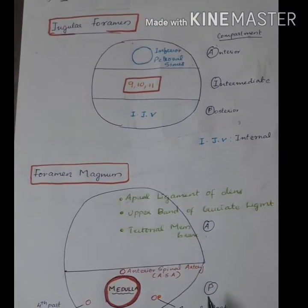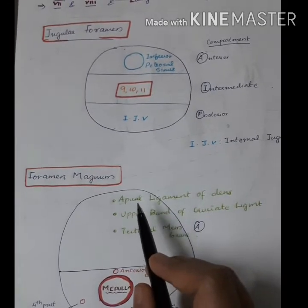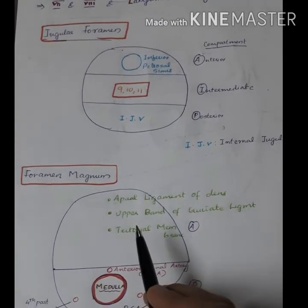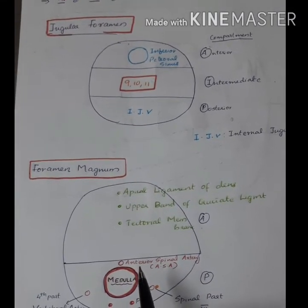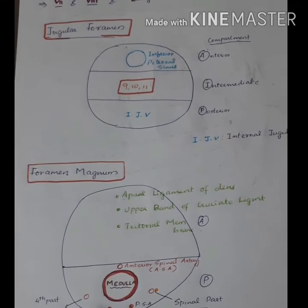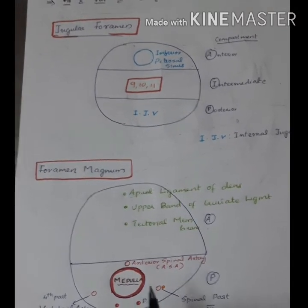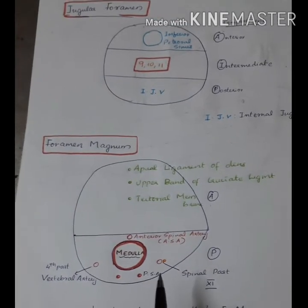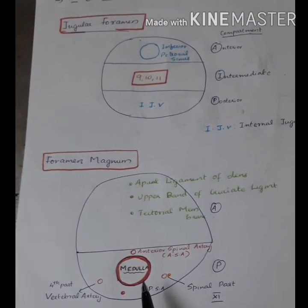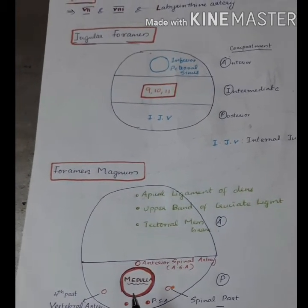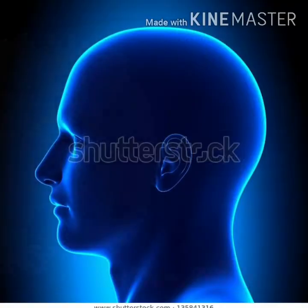The foramen magnum can be divided into anterior and posterior compartments. In the anterior compartment, three structures pass through: the apical ligament of dens, the upper band of the cruciate ligament, and the tectorial membrane. In the posterior part, the medulla, anterior spinal artery, posterior spinal artery, the fourth part of the vertebral artery, and the spinal part of the 11th cranial nerve pass through. Note that the spinal cord does not pass through the foramen magnum; only the medulla passes through. The spinal cord extends from C1 of the vertebra to the lower border of L1.